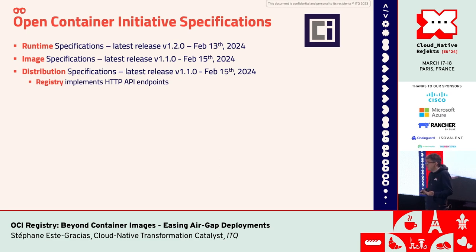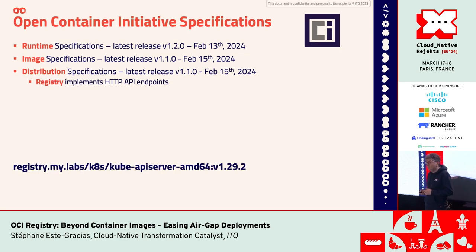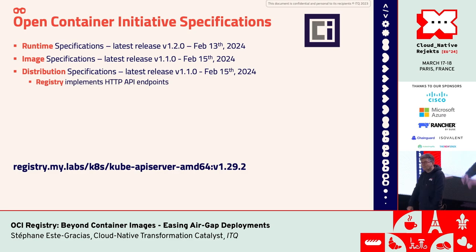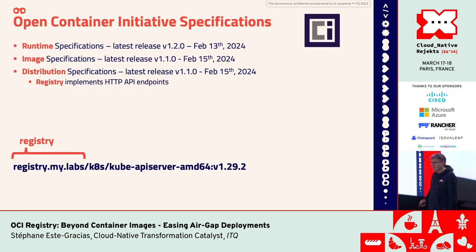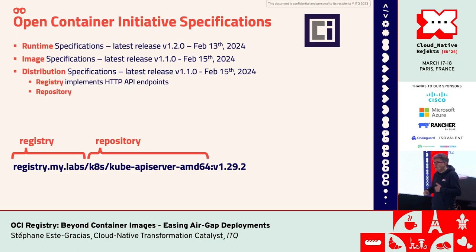Before that, I will remind you of some terminology used with OCI registries. First, the registry itself — a service that implements HTTP API endpoints to pull and push images. Then here you have a typical URL used by a registry client. The first part of this URL is the registry — the server hostname where the service is running. Then you have the repository that contains all images for a specific application, so you can have multiple versions in the same repository. It acts as a namespace for grouping images.